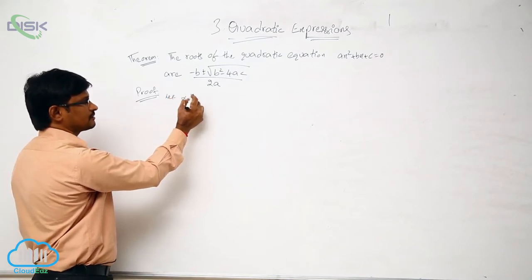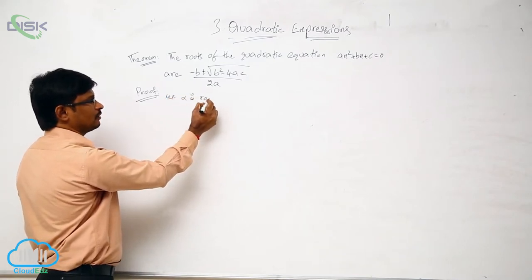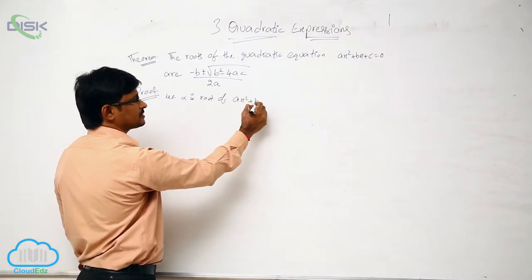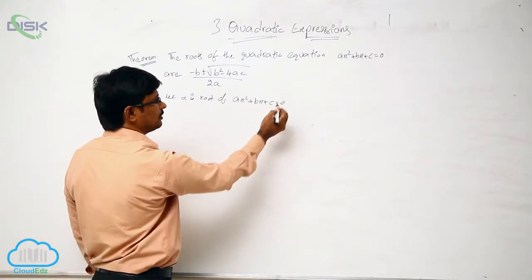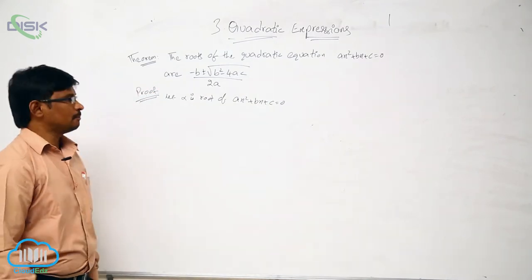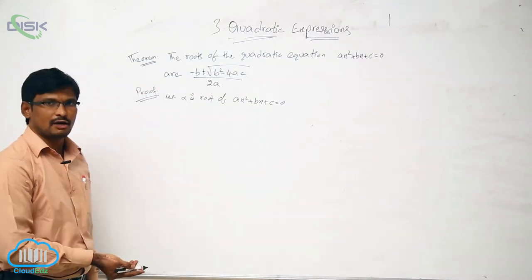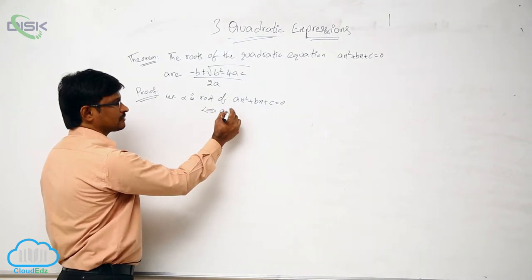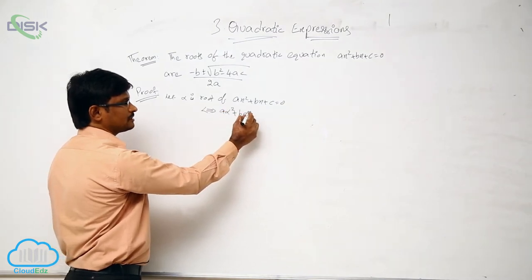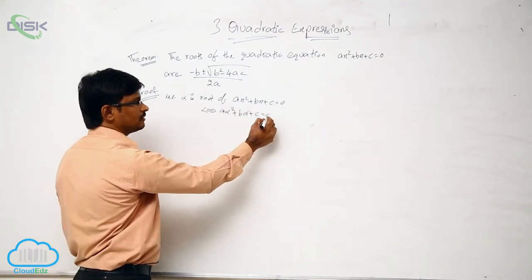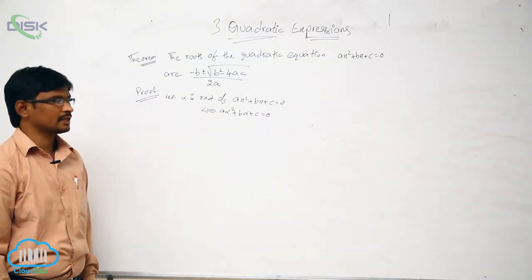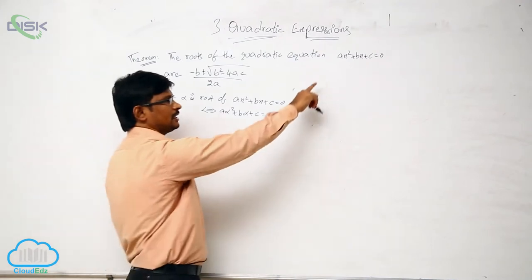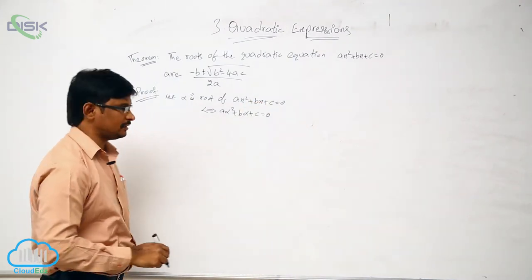Let alpha be a root of the quadratic equation Ax² + Bx + C = 0. By the definition of a root, it becomes: A·alpha² + B·alpha + C = 0. Note that in this quadratic equation, A should not be equal to 0.